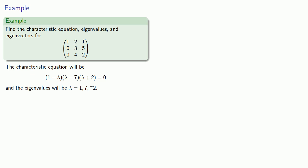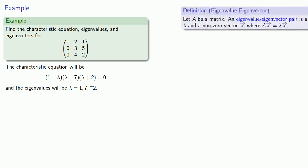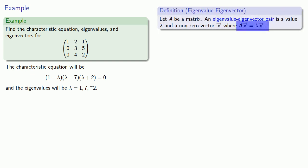If lambda equals 1, the system of equations we're trying to solve corresponds to matrix applied to vector (x1, x2, x3) equals 1 times (x1, x2, x3), and this gives us a system of equations.